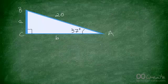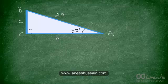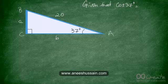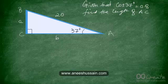Let's try another example. Given that cos of 37 degrees is equal to approximately 0.8, find the length of AC, which is marked as B. Try solving this on your own — go ahead and pause the video.